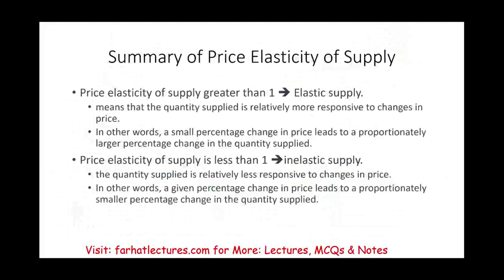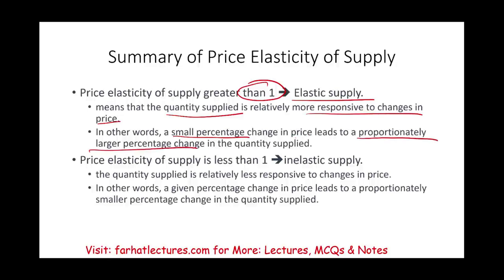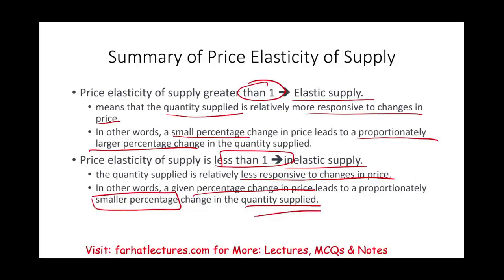To summarize: if elasticity is greater than 1, supply is elastic — a small percentage change in price leads to a proportionally larger percentage change in quantity supplied. If it's less than 1, supply is inelastic — a given percentage change in price leads to a proportionally smaller percentage change in quantity supplied.